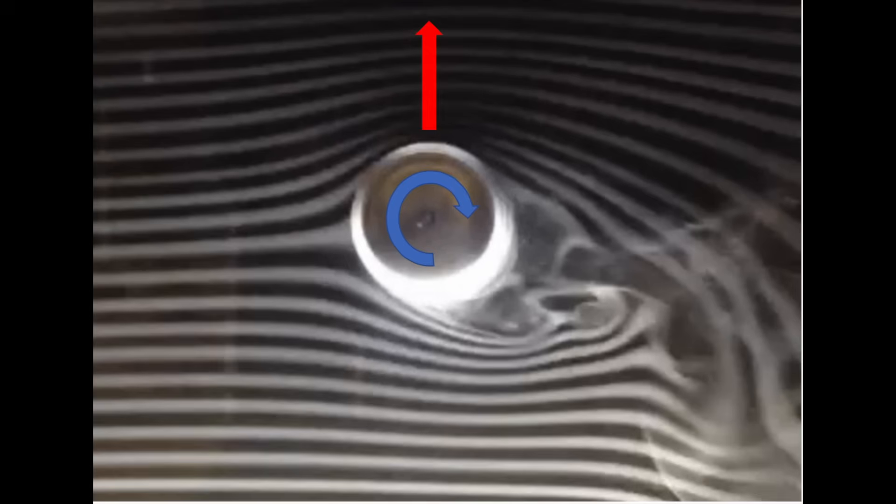Here's a visible model of the Magnus effect using smoke and a spinning object. The red arrow indicates the direction of the Magnus force.